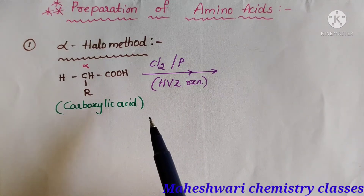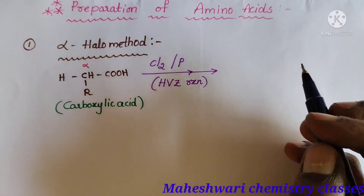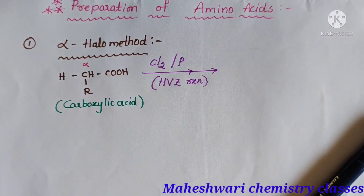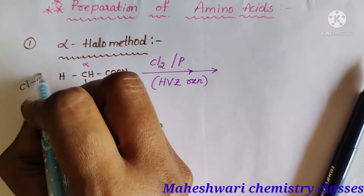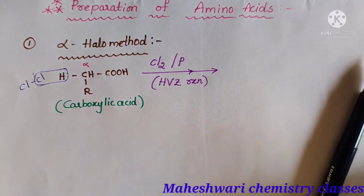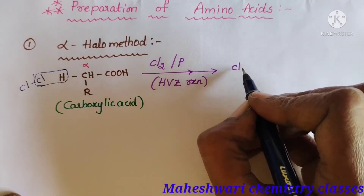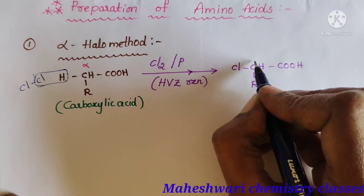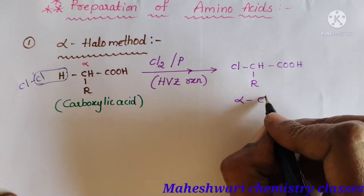This carboxylic acid reacts with chlorine in the presence of phosphorus to form alpha chloro carboxylic acid. Two hydrogens (H) and Cl are involved: two H and Cl minus are eliminated, and in place of hydrogen, Cl is substituted, forming Cl-CH-COOH. At the alpha carbon we have one chlorine, which is why it is called alpha chloro acid.